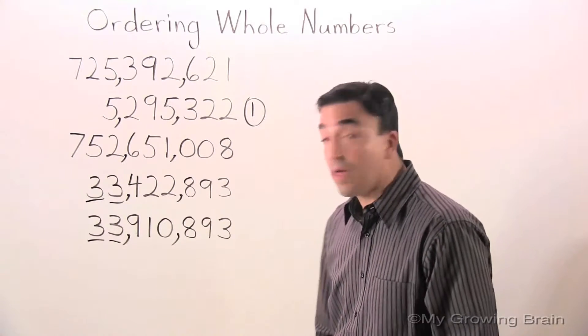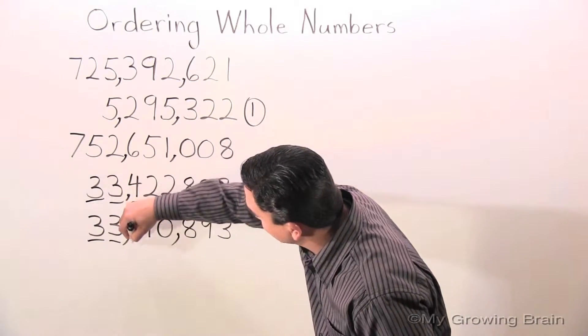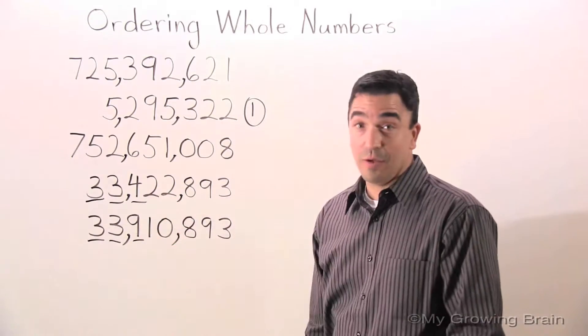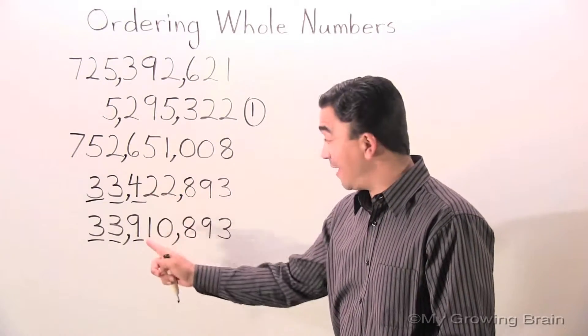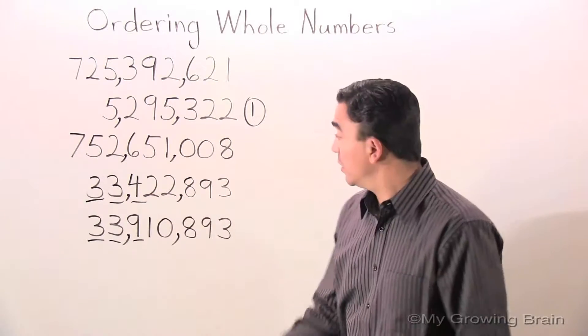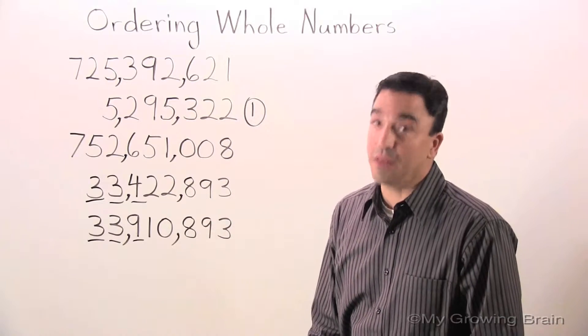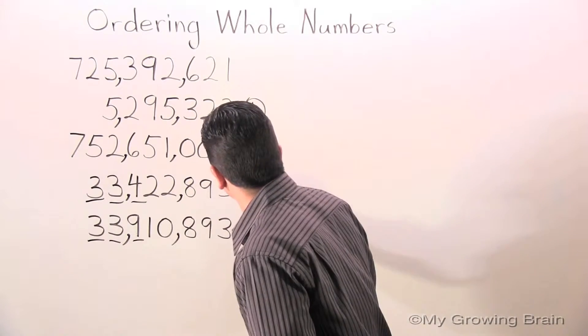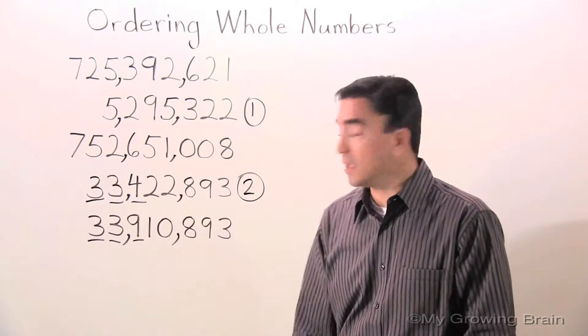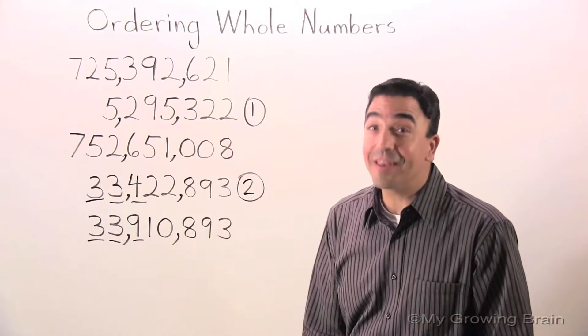Let's go to the hundred thousands place. There you go. Four, nine. We know that four is less than nine. Therefore, number two is 33,422,893. Number three is 33,910,893.